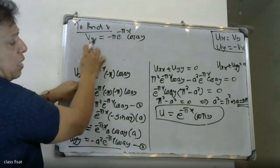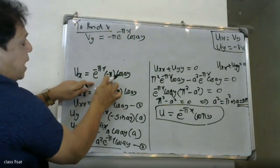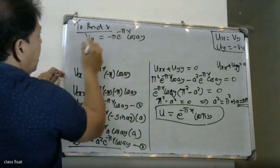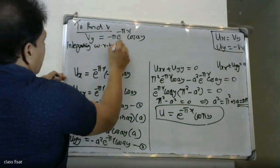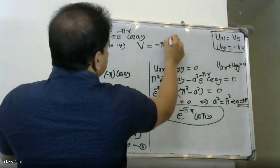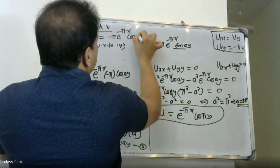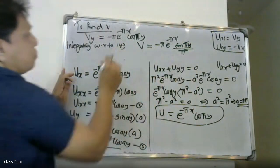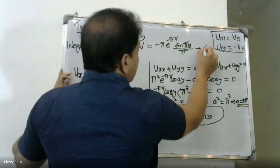From the Cauchy-Riemann equation, v_y = u_x = -π e^(-πx) cos(πy). We integrate v_y with respect to y: v = -π e^(-πx) times sin(ay)/a. With a = π, this gives v = -e^(-πx) sin(πy)/π times π, so v = -e^(-πx) sin(πy) plus an arbitrary function φ(x).